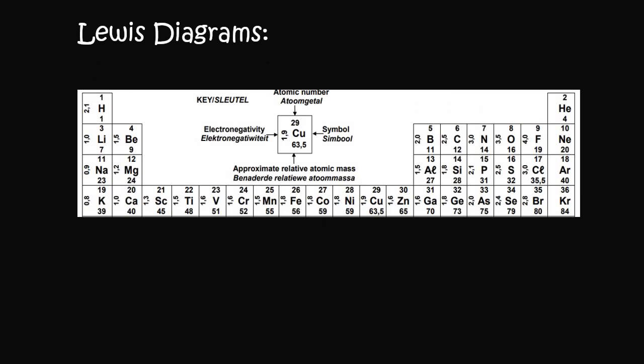Next we'll do boron. Boron is in group one, two, three. So you just draw B for boron and then put three electrons, always separated — remember, because there are only four different locations possible. That is boron.